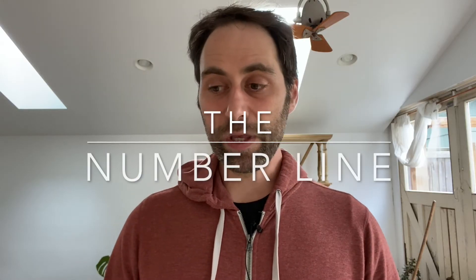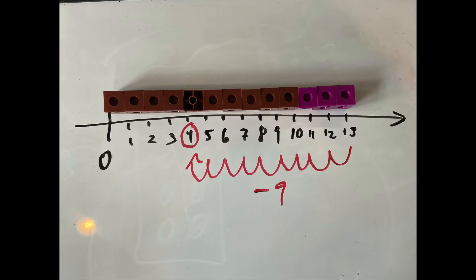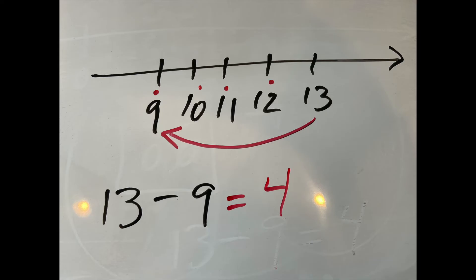Another great model is the number line. We can do 13 minus 9 on the number line in two different ways. One is we start at the number 13 and understand subtracting 9 as moving to the left 9 spaces. If we start at 13 and walk left 9 spaces, we'll end up at 4. There's another approach: what's the difference between 13 and 9? That is, how far would you have to move to get from 13 to 9? And that's also 4, but a very different model and understanding.